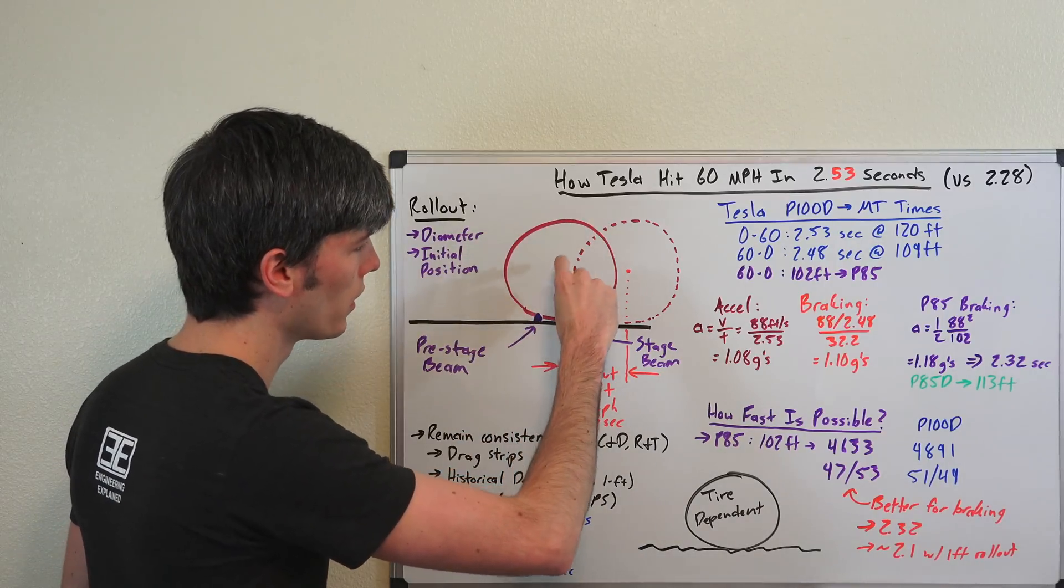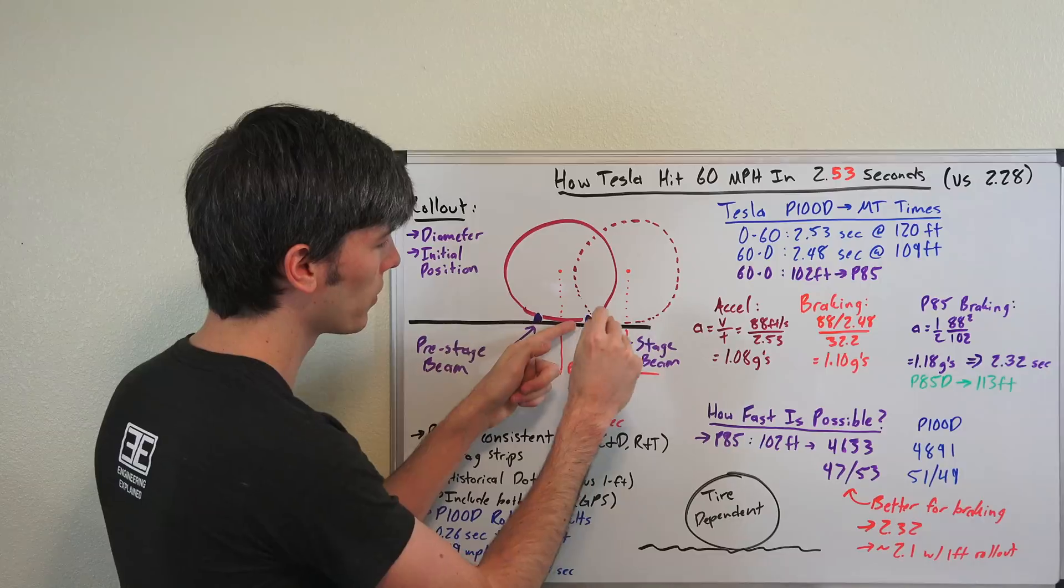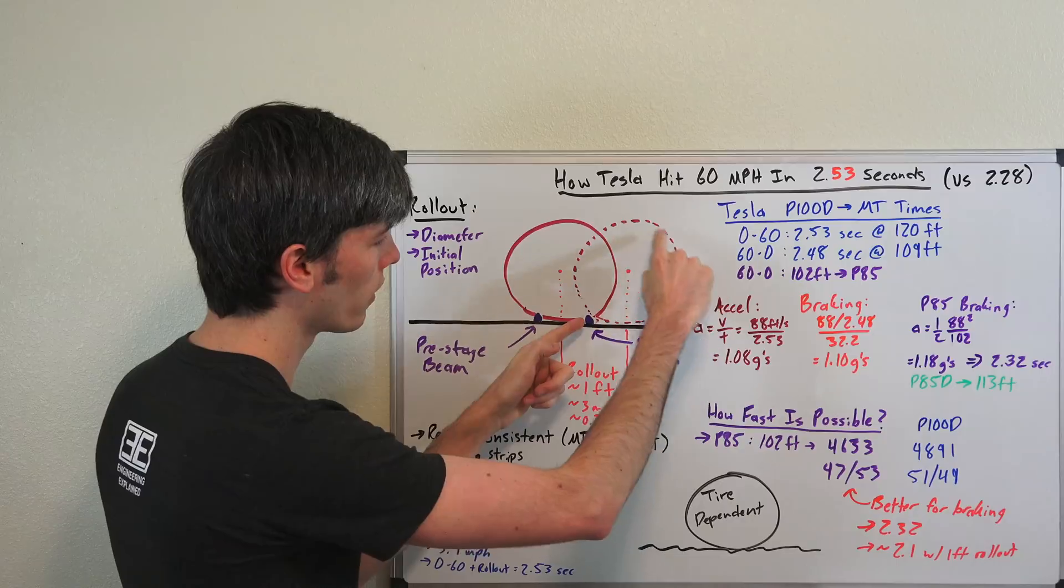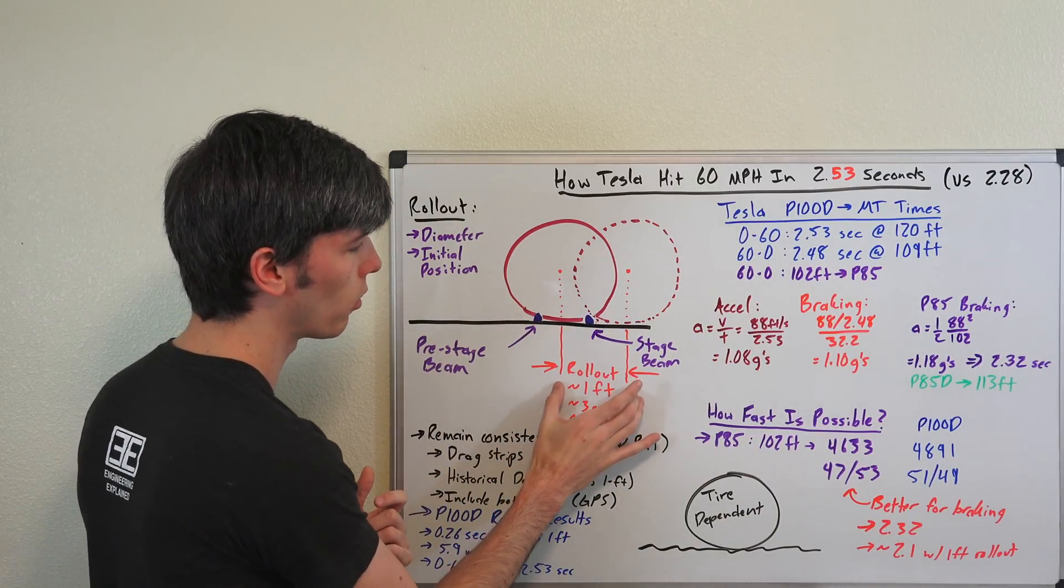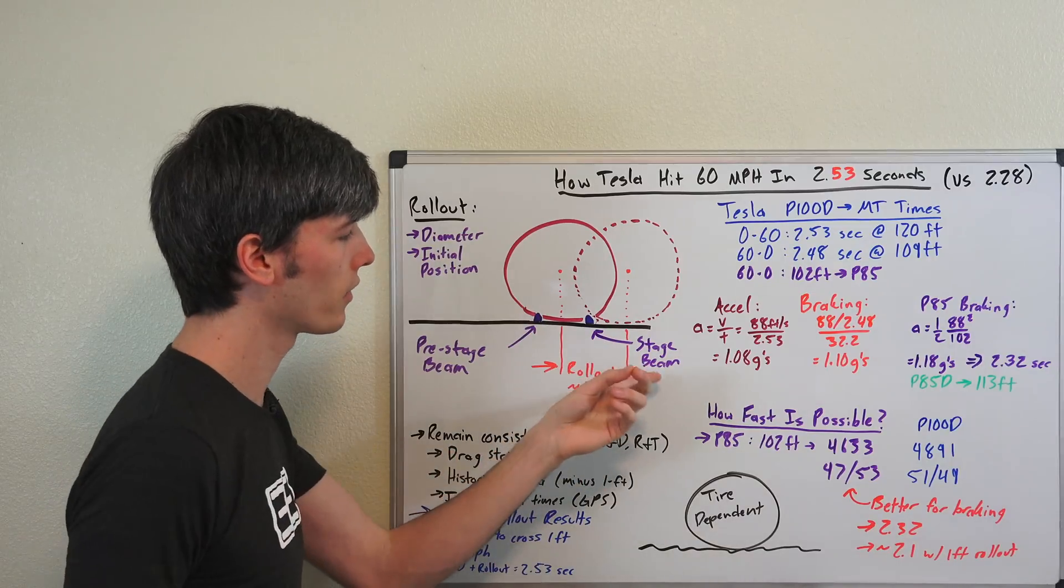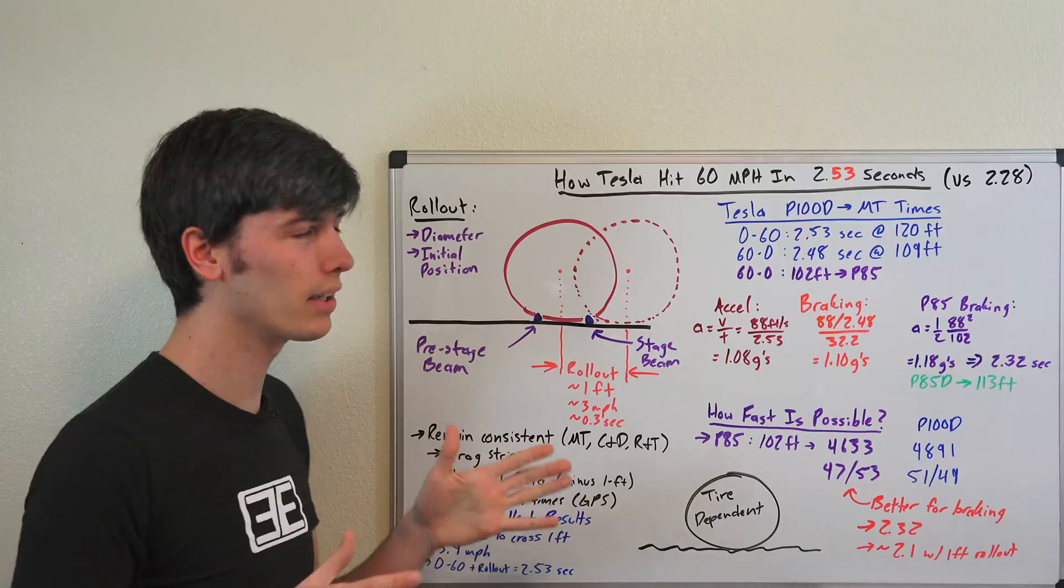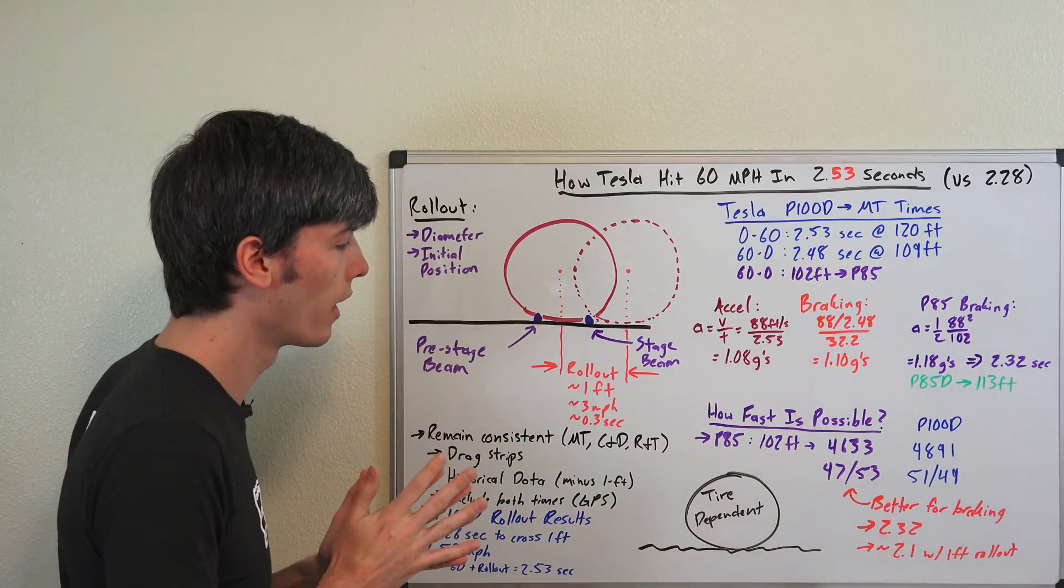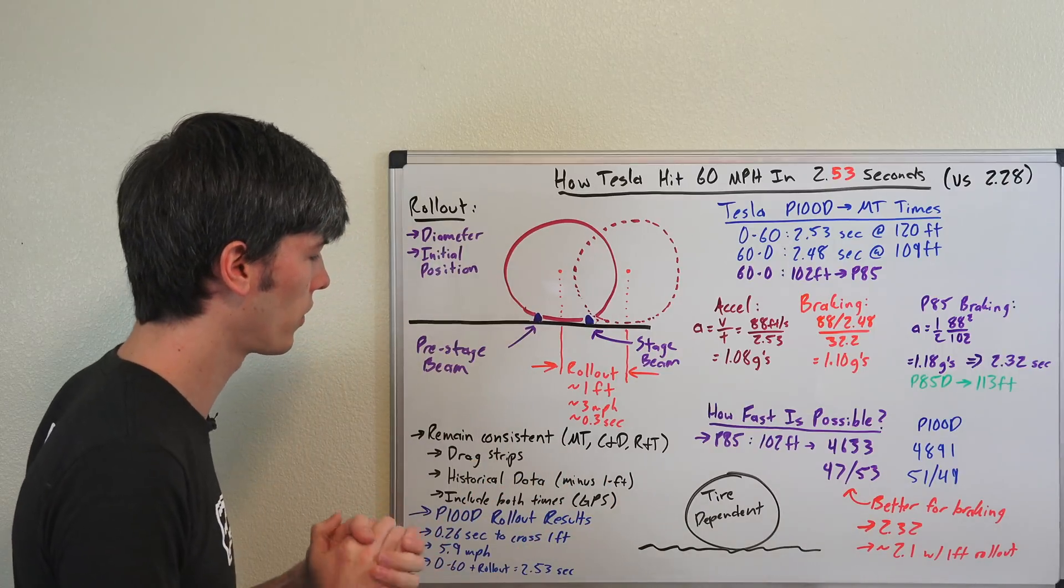So your tire is going to start to roll. You're going to continue to move and so you're already moving and this stage beam is still pointing on your tire until you leave it completely. And that's when the clock starts and so this distance right here is that rollout. That's basically free time because the stage beam hasn't started the clock yet and yet you're moving. And so typically this ends up being about one foot, you get up to about three miles per hour and it gives you about a 0.3 second advantage in your 0 to 60 time.